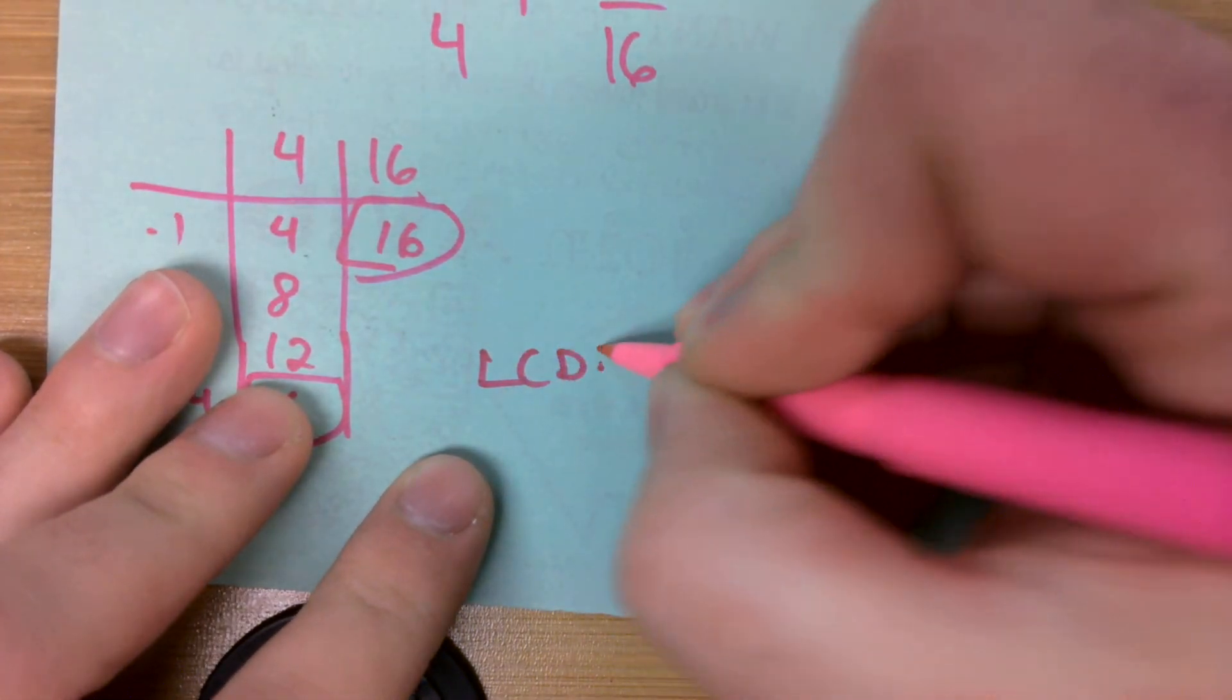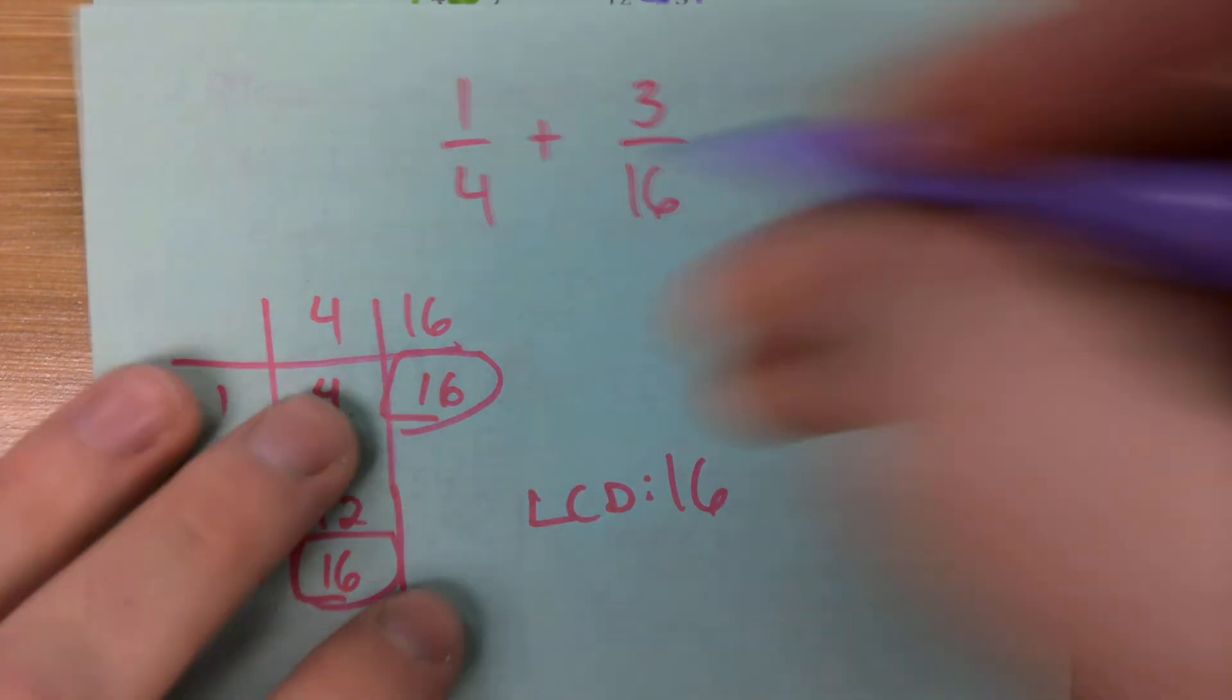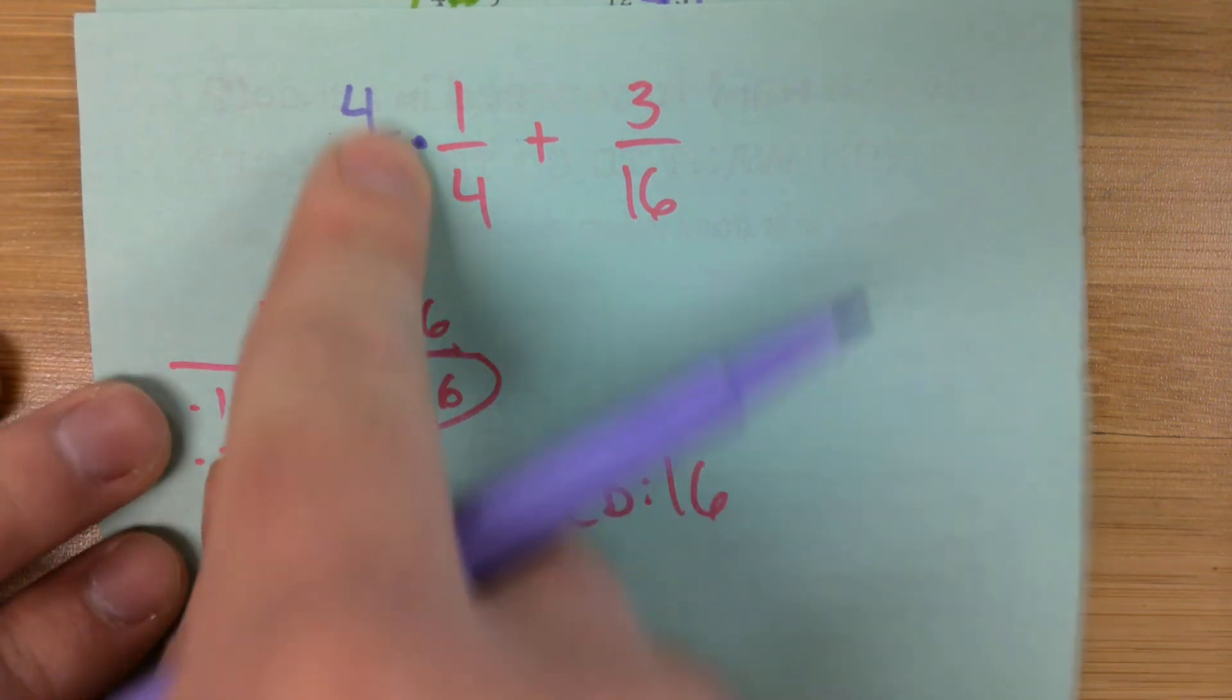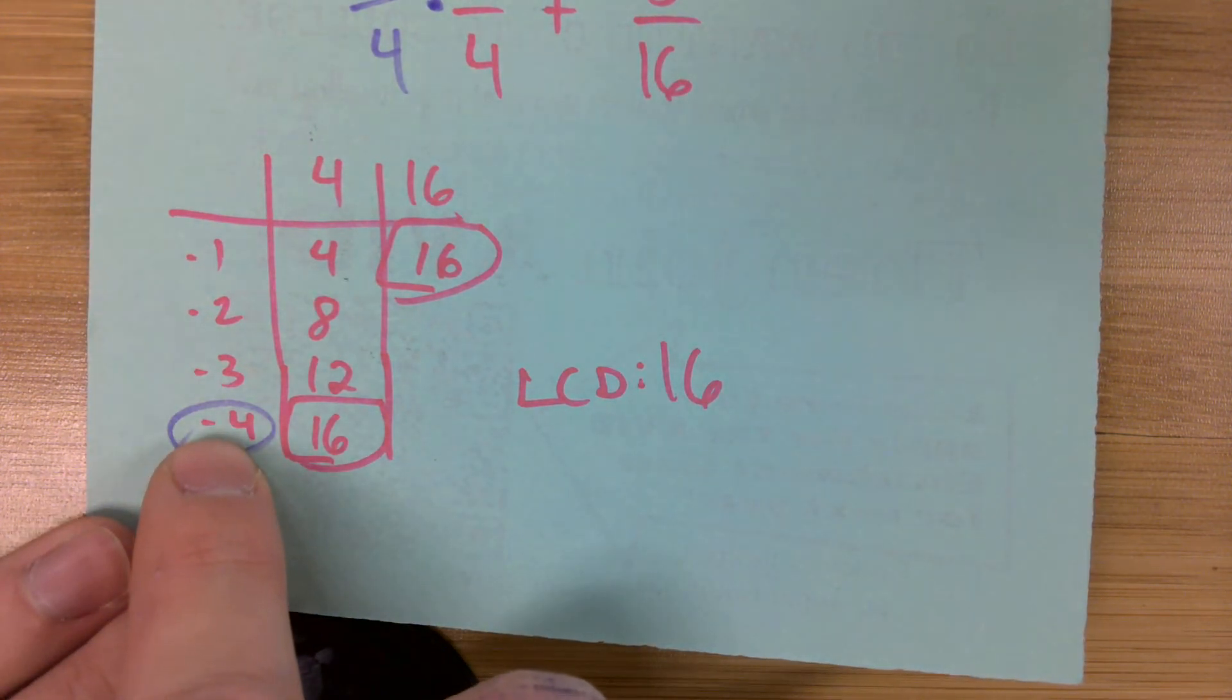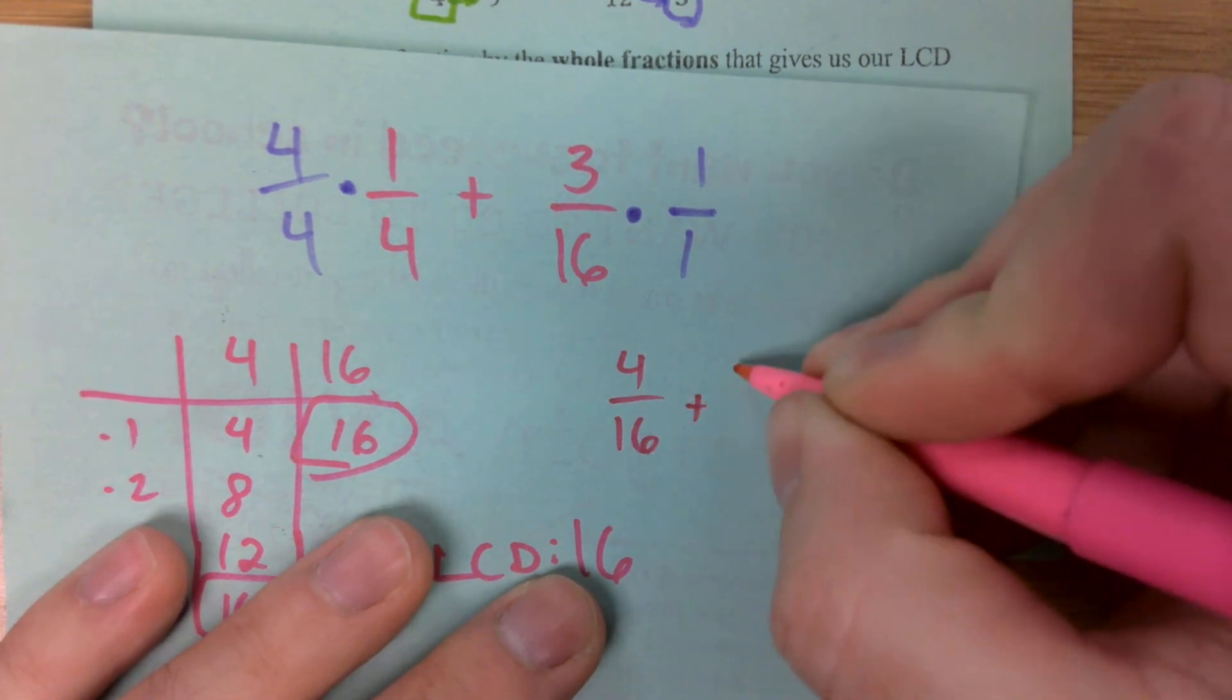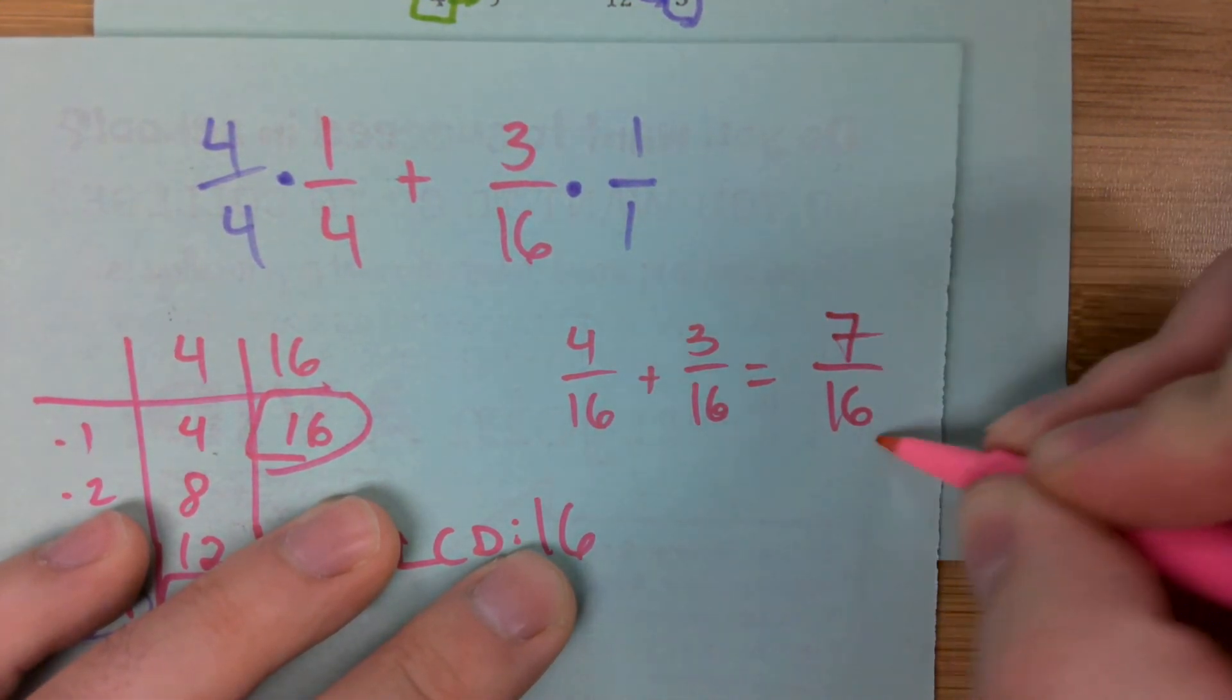So our LCD here is going to be 16. What are we going to have to multiply this first fraction by? 1 over 4. Noah, what do we have to multiply this fraction by? 4 over 4. Why do you say that? What's that going to give us on the bottom? 16, right? So Noah just multiplied 1 over 4 by whatever multiplier gave us 16. That's the LCD we want. We see that we got 16 by multiplying by 4. So we can multiply this by the fraction 4 over 4. What are we going to multiply 3 over 16 by? 1 over 1. Great job. Which basically means we're doing nothing to it, so we don't have to. And then we get 4 over 16 plus 3 over 16. We add those together, and what do we get? 7 over 16. That's what we get for that one.